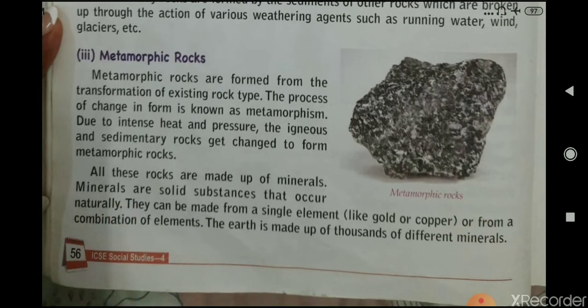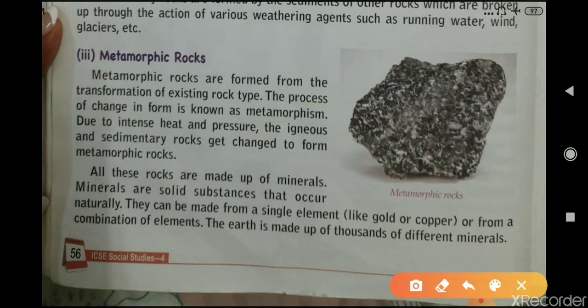Third is metamorphic rock. Metamorphic rocks are formed from the transformation of existing rock types. The process of change in form is known as metamorphism. Due to intense heat and pressure, igneous and sedimentary rocks get changed to form metamorphic rocks.